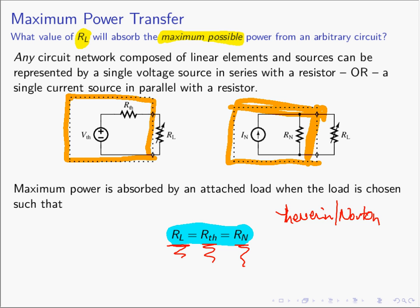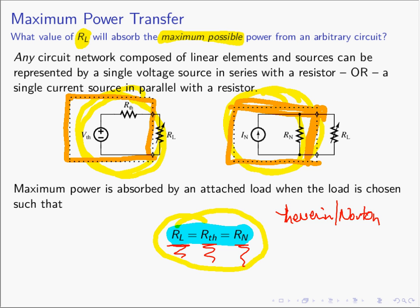This shows the true power of Thevenin and Norton's theorem. The fact that any circuit can be represented by something simpler gives us the opportunity to do a simple analysis that can be applied to any circuit. Maximum power transfer is something we do all the time in electrical and computer engineering — we design a circuit to compute a voltage or current and want to transfer that result with maximum possible power. We'll go back and review Thevenin and Norton circuits and this theorem, because it is incredibly powerful and gets used all the time. Thanks for listening, see you next time.